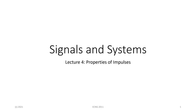Good afternoon everyone and welcome back. Continuing from yesterday, we spent the lecture talking about the properties of impulses, moving them around, and things like sampling — how you can explain sampling using impulses shifted in time. We spoke about the comb function, how you develop it, what happens when you multiply a comb function with a signal, and how you get the sampled signal coming out.